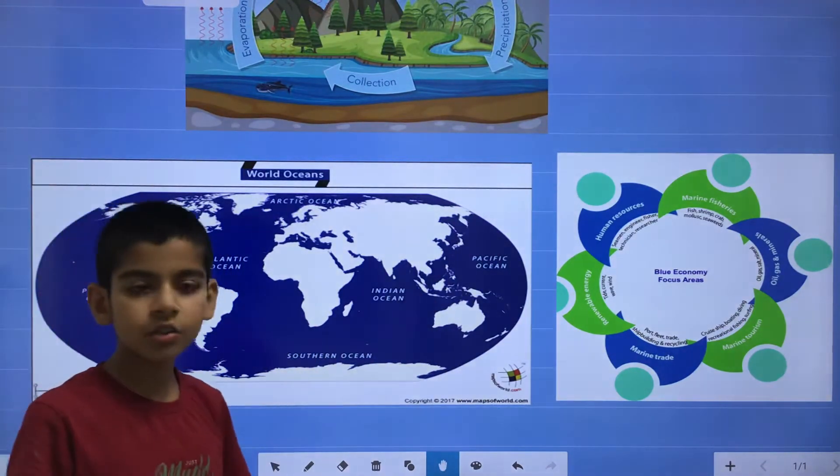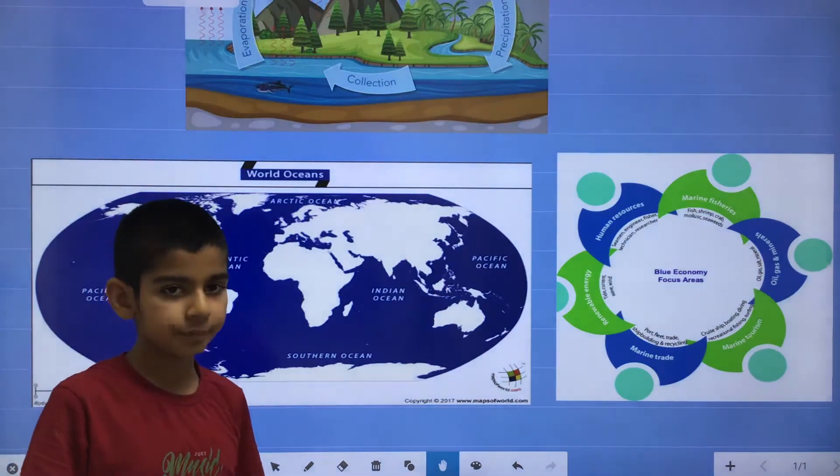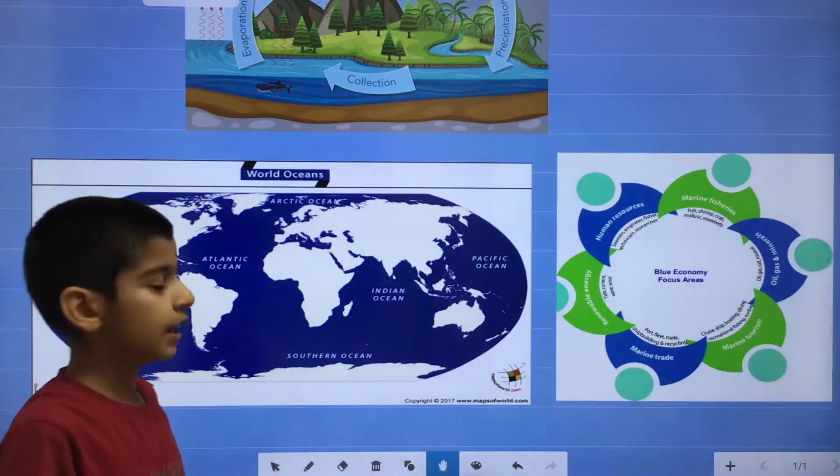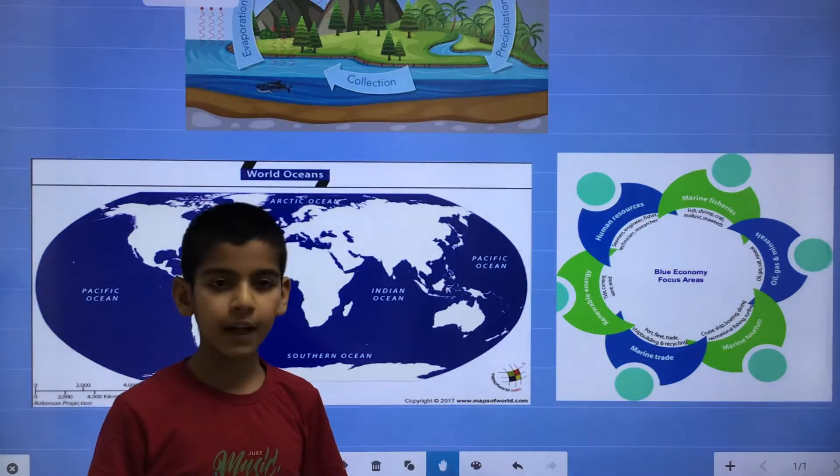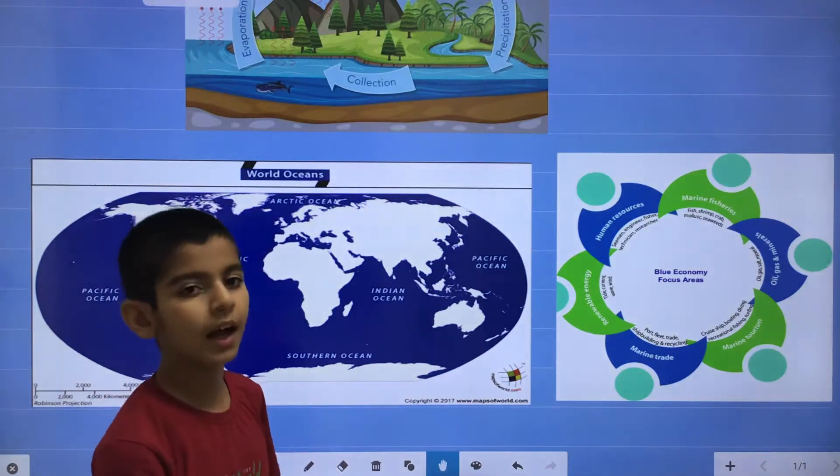Southern Ocean is also known as Antarctic Ocean. And the Arctic Ocean is covered from the ice. And the animals live there are polar bears.